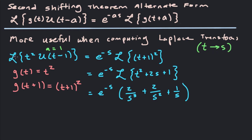For example, let's take the Laplace transform of t²·u(t-1). We identify g(t) = t². This is not (t-1)², so we can't use the first form — we use the alternate form. Since g(t) = t², then g(t+1) = (t+1)². Using the second shifting theorem with a equals 1, we get e^(-s) times the Laplace transform of (t+1)².